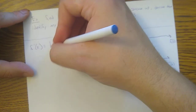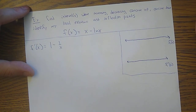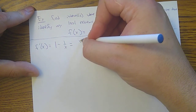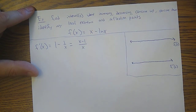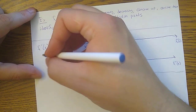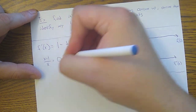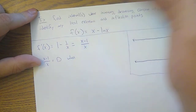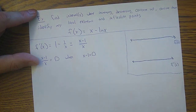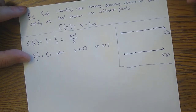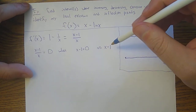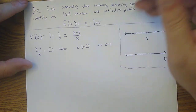f′(x) = 1 - 1/x. Getting a common denominator, this becomes (x - 1)/x. To find critical numbers, I set this equal to zero and multiply both sides by x, giving x - 1 = 0, so x = 1. I should also find where f′ is undefined — that's x = 0. However, the original function has a natural log in it, and you can only take the natural log of a positive number, so x = 0 was not even in the domain.